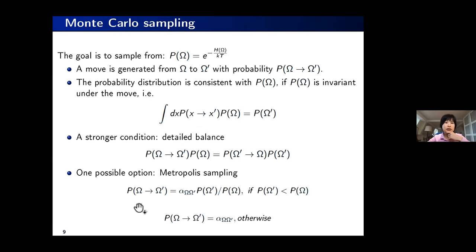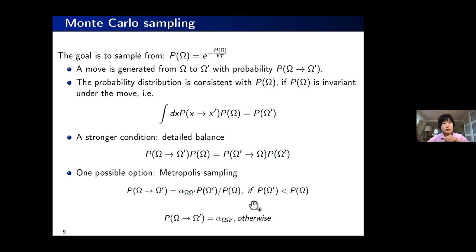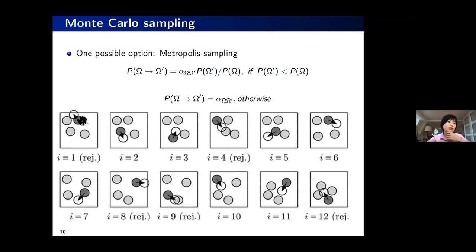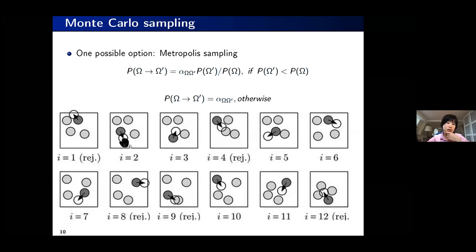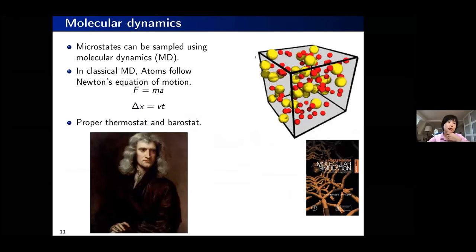One possible sampling option consistent with detailed balance is the famous Metropolis sampling. If the probability of omega prime is higher than p(omega), we always accept the move; otherwise we accept it with probability equal to the ratio of the two probabilities. Each time we propose a move, if the energy of the system goes down we always accept it. Monte Carlo is not that common these days, but the underlying principle is very elegant.